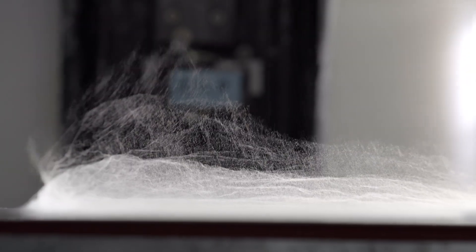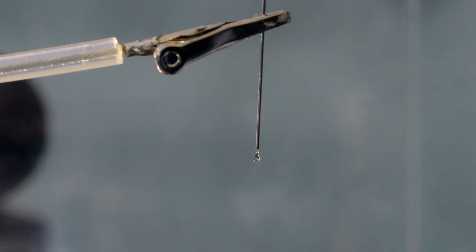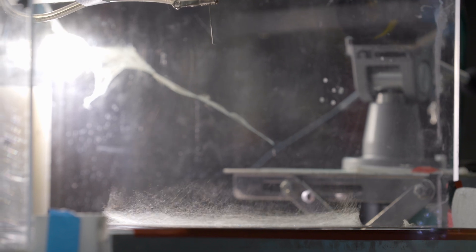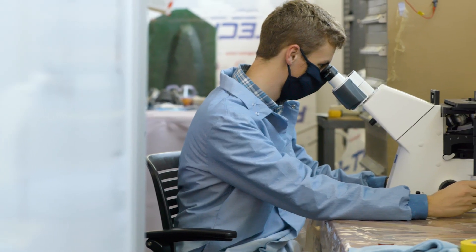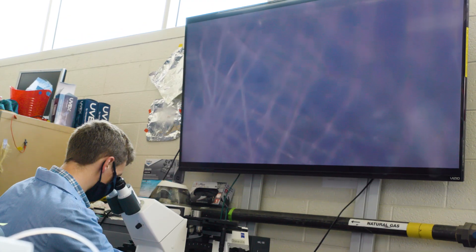The process we use is called electrospinning. We take a liquid polymer which we then push through a tube at high voltage and it stretches this polymer nice and thin into nanofibers. We then spray these nanofibers across a material evenly but in a random manner which creates a nice filter.